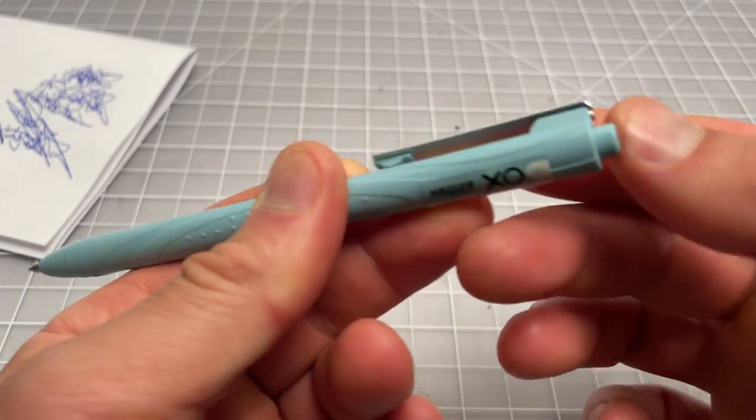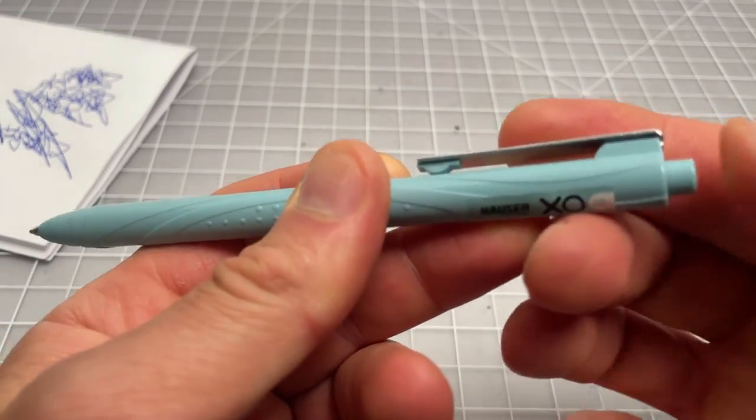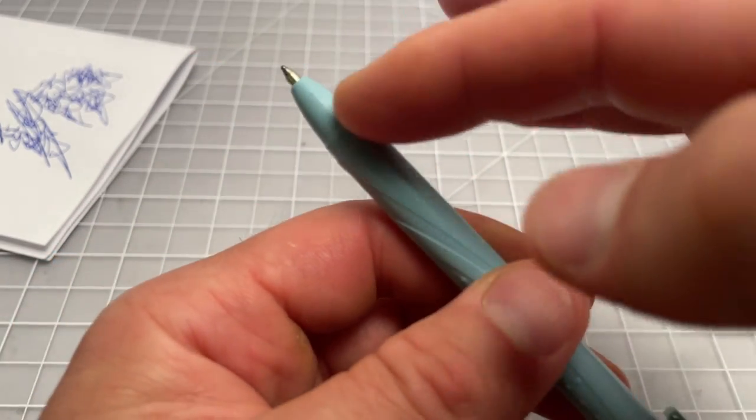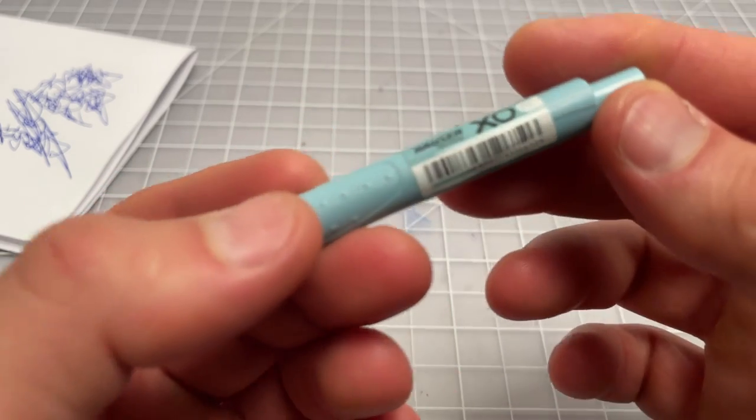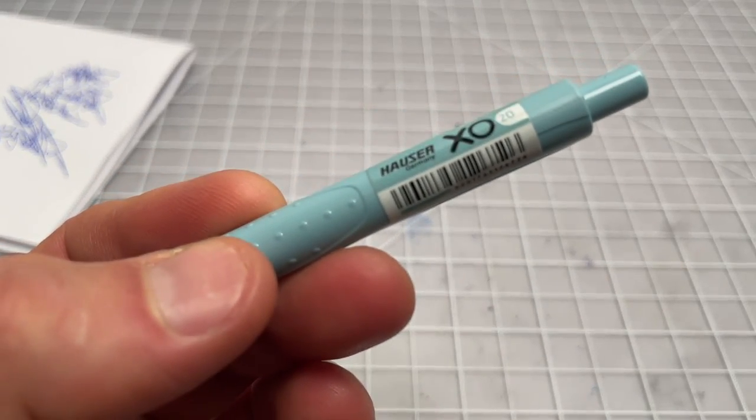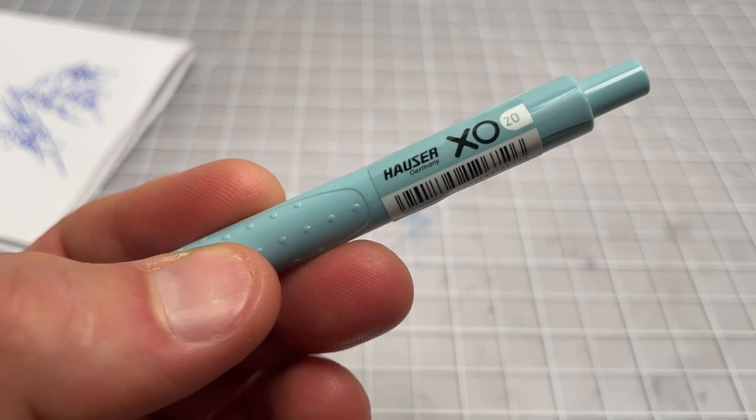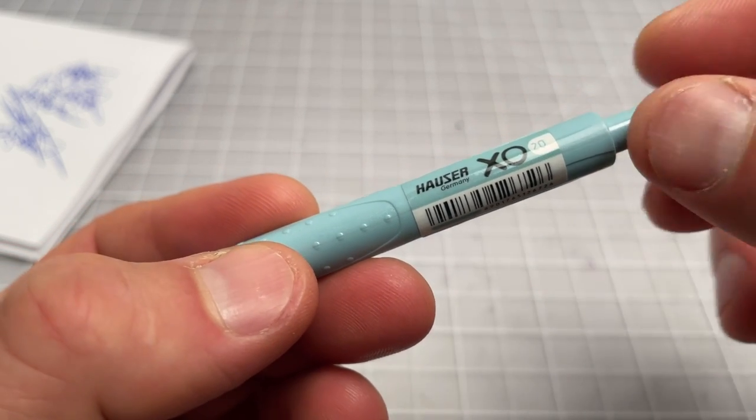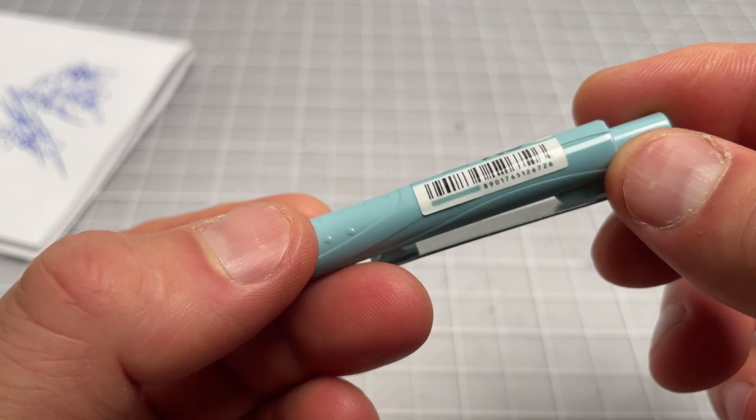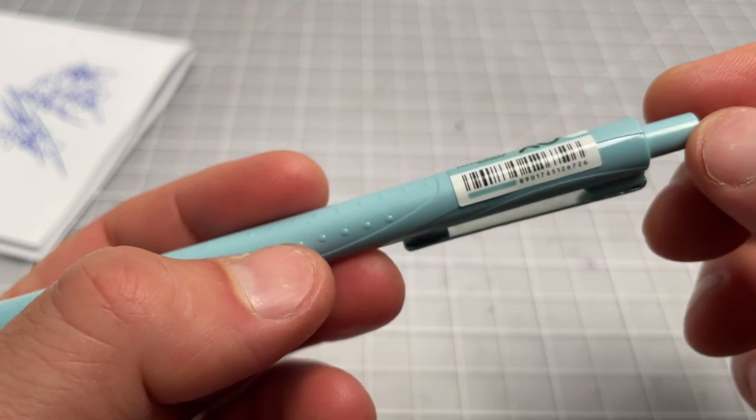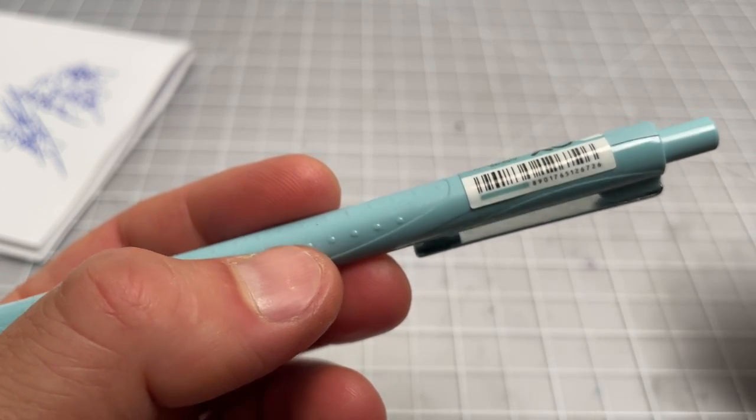Retractable. The click does not feel very good. It feels kind of muddy, a little like wishy-washy, kind of like there's some friction. It's not great, but it works. As far as the label goes, it's pretty simple. Hauser XO 2.0, or 20 rather. It looks like 2.0, but it's 20. Here is an ID number or barcode. It doesn't really mean anything to me. No pricing information and no refill information.